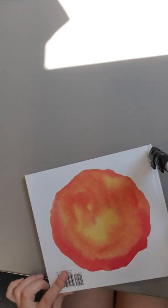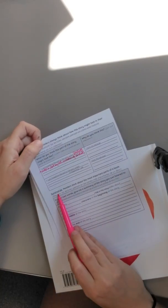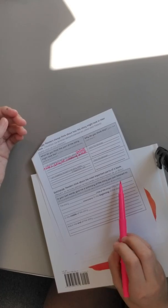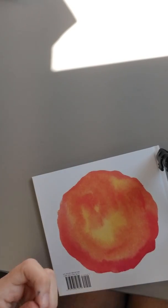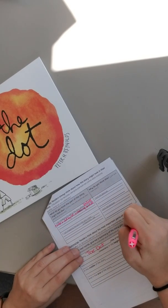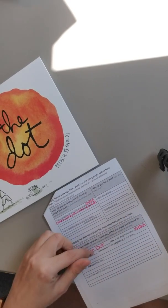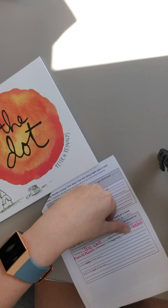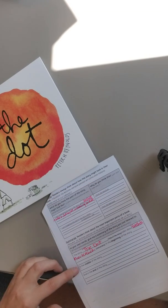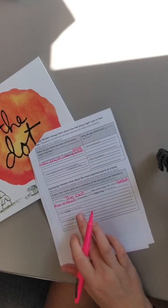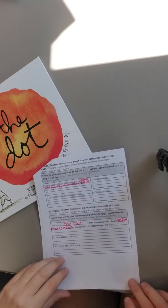So now we're going to jump back to our respond and blog paper. We're going to summarize this story. Readers think about the most important parts of a book. So in your own words, give me a summary of the story you just listened to. The story blank title of the story. So the title of the story is The Dot. The Dot talks about Vashti, she's the character, and her teacher. In the beginning of the story, what's going on? What happens to Vashti in the beginning? In the middle, what's going on there? What's the next thing that happens? In the end, what's happening with Vashti there? So go ahead and fill in the beginning, middle, and end of this story into these blanks.